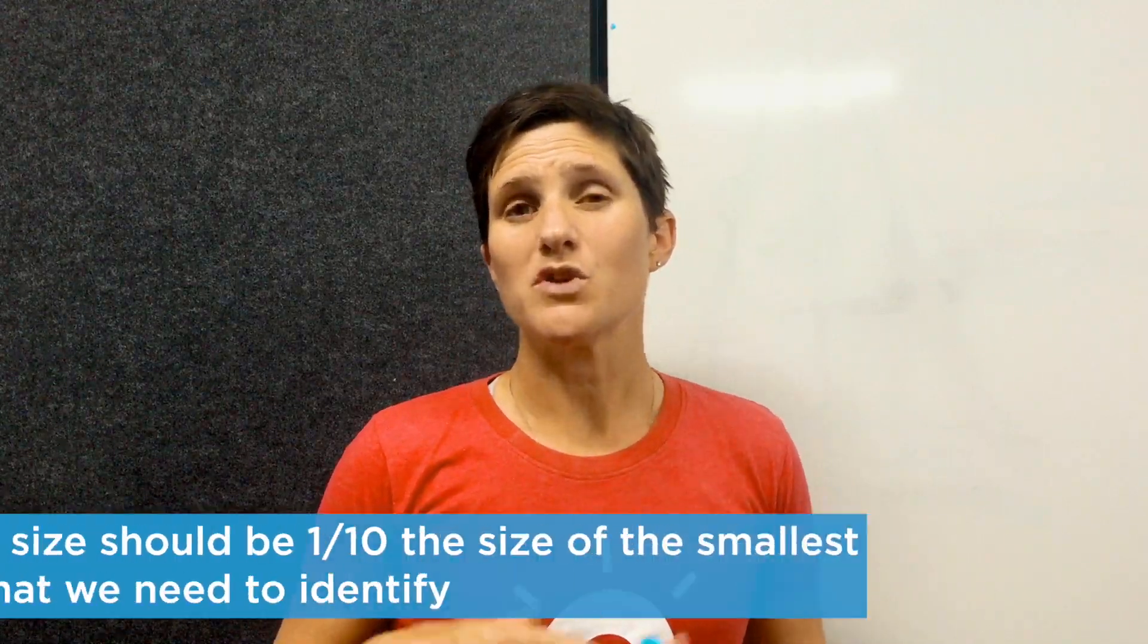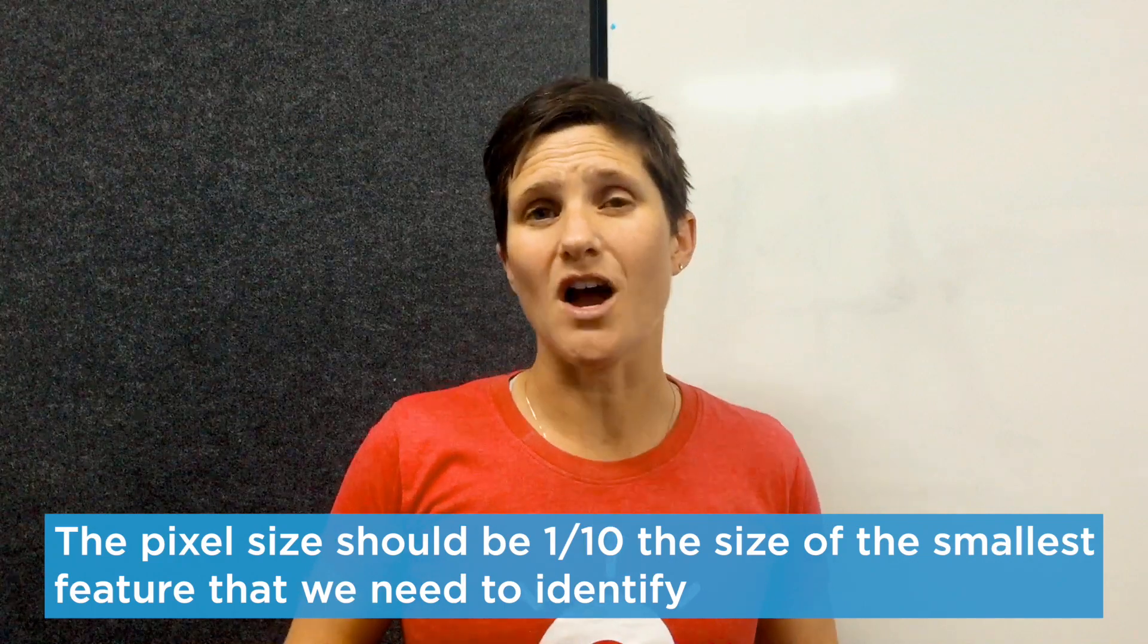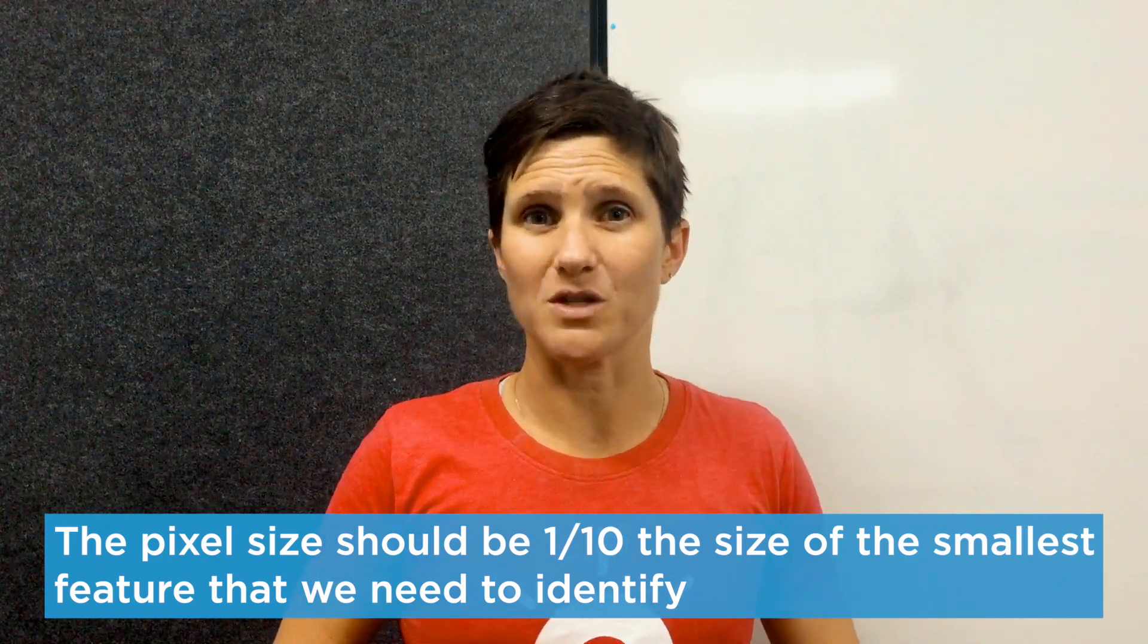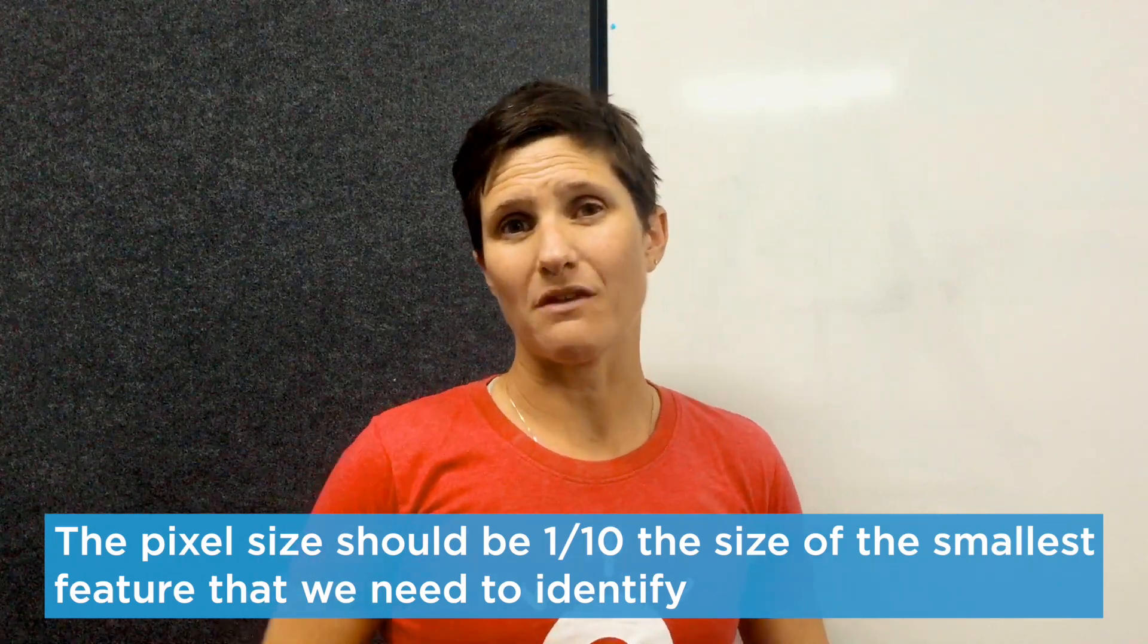So how do we actually figure out how high to fly in that case? First of all, we need to figure out how much of an area do we need to cover and what is the size of the smallest feature that we need to identify. Then we use the rule of thumb that we use a pixel size that's one-tenth the size of the smallest feature we need to identify. So figure out what that feature is and then you've got your pixel size.